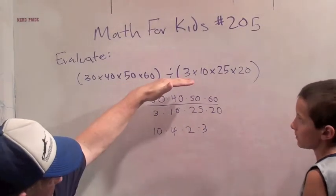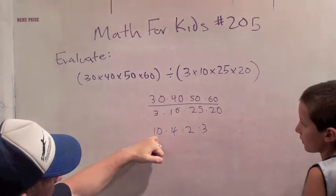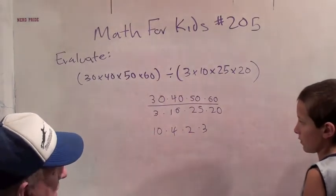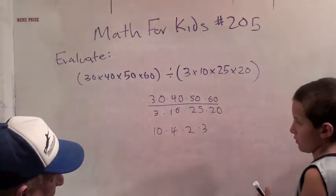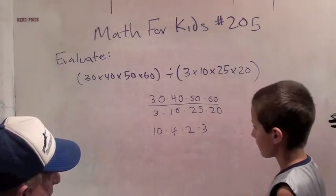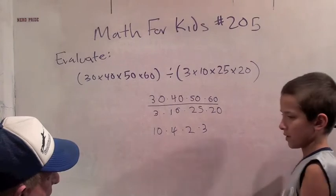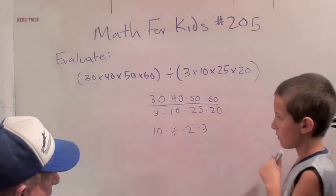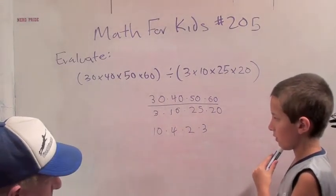Oh, so this very complicated expression just came down to multiplying 10 times 4 times 2 times 3. Now, is there a quick way to do that? Well, there's 2 times 3 is 6. Maybe there's even quicker.